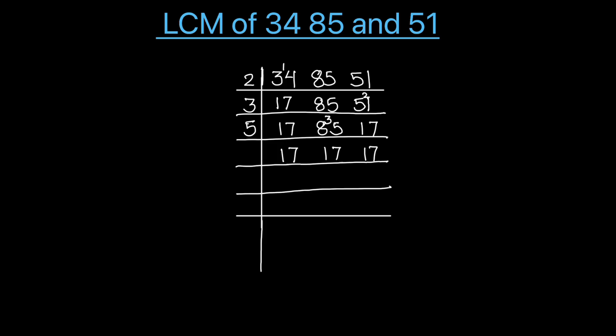So 17 times 1 is 17. All the numbers are fully divided. Now we'll take the product of the numbers on the left hand side of the ladder to find the LCM of these three numbers.